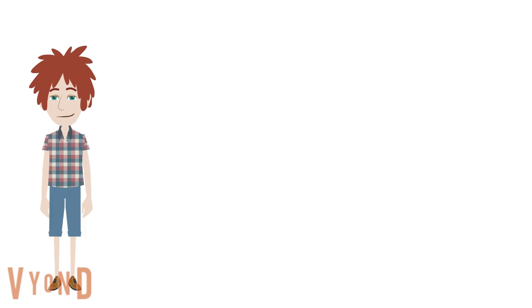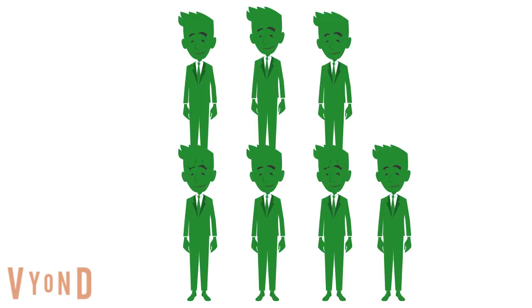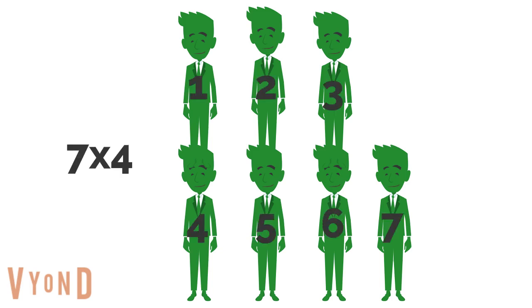How can you break up a multiplication fact? Maria wants to set up 7 rows of 4 chairs for a meeting. She wants to know how many chairs are needed, but does not know the product of 7 times 4. How does this arrangement of chairs show 7 times 4? The chairs are in an array — there are 7 rows with 4 chairs in each row.